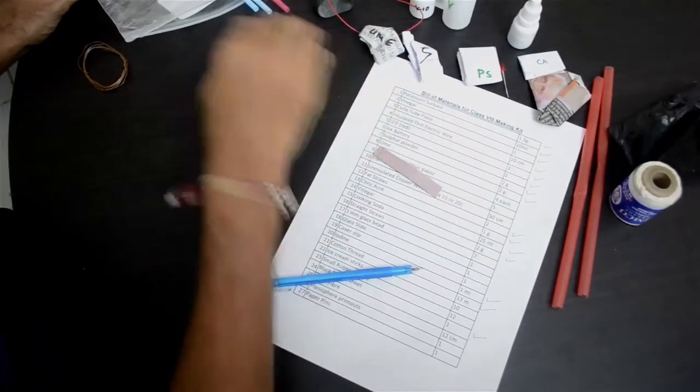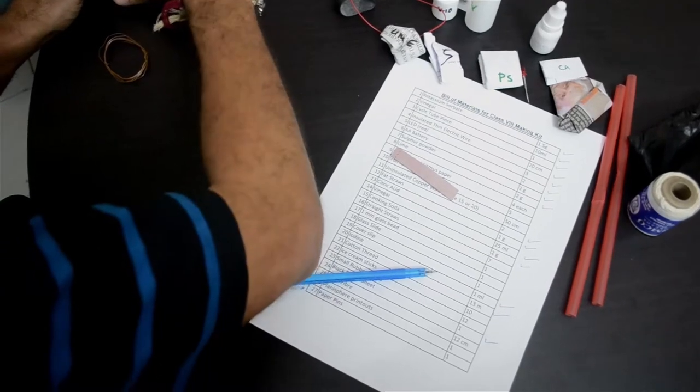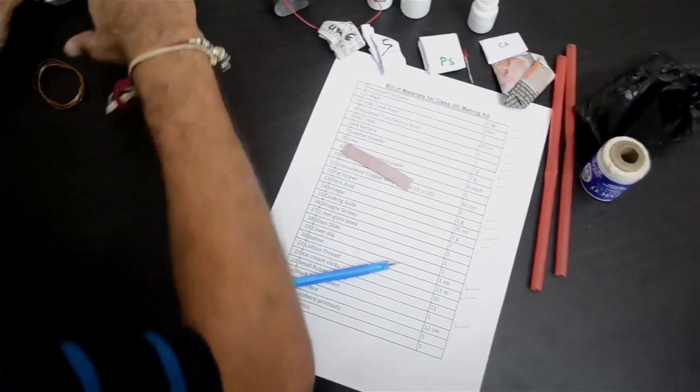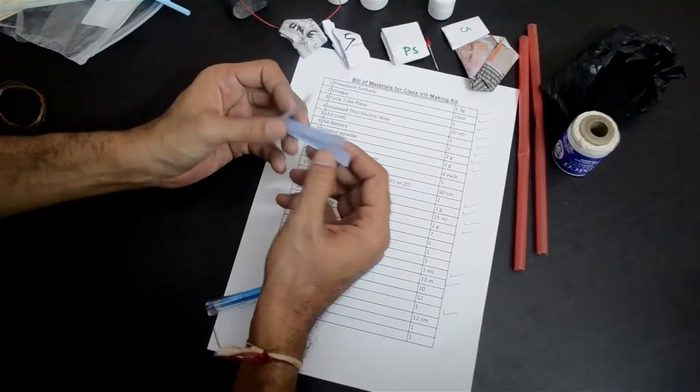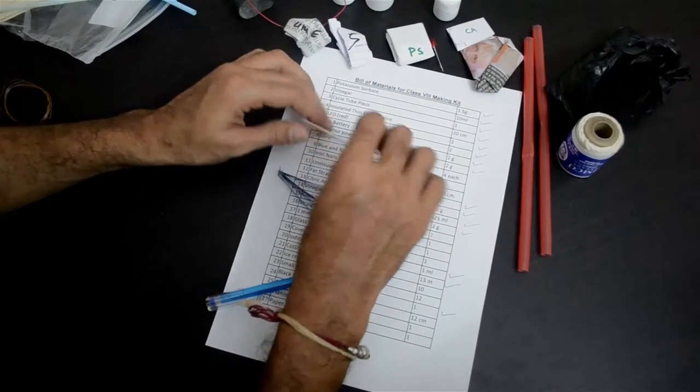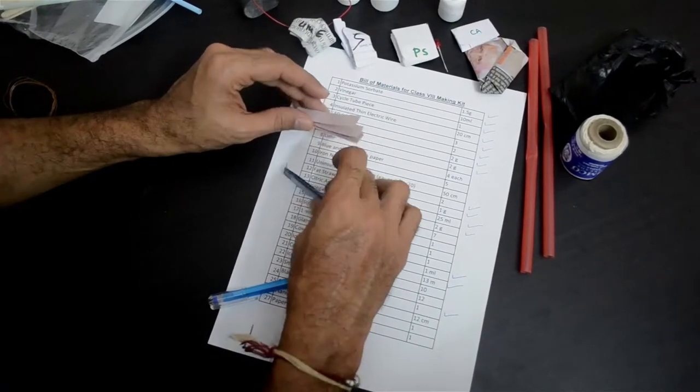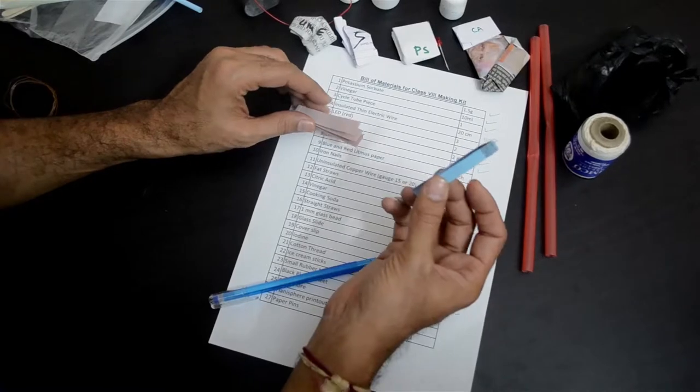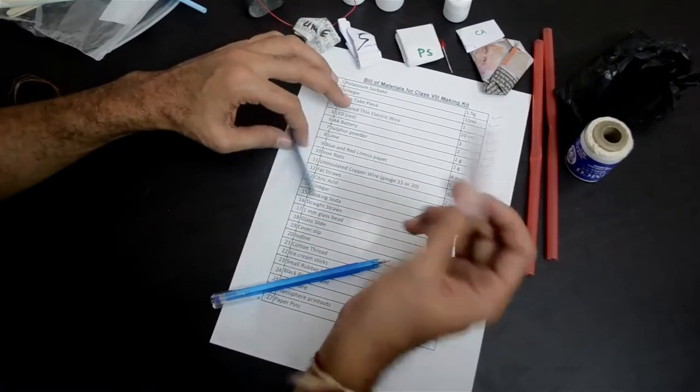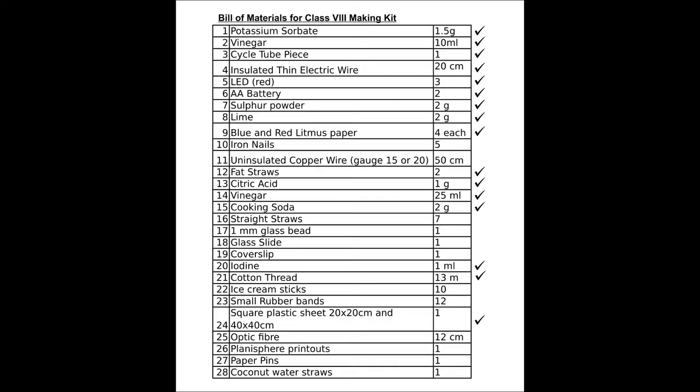You also have the litmus paper packed in the kit, four of each. The blue litmus paper and the red, for detecting acid, detecting base. Four of each. Litmus paper, which is item number 9 in our list.